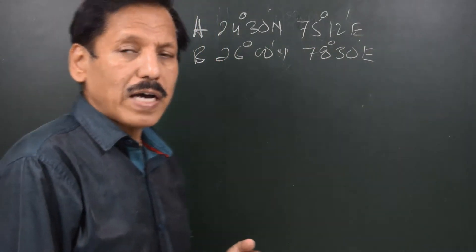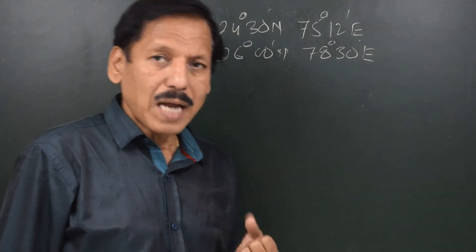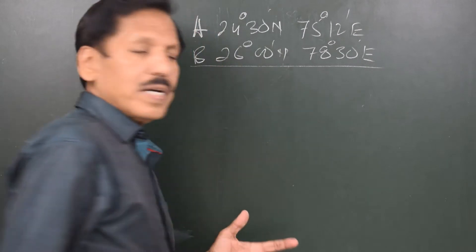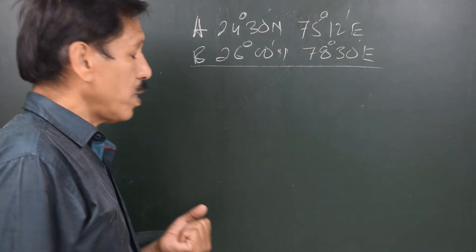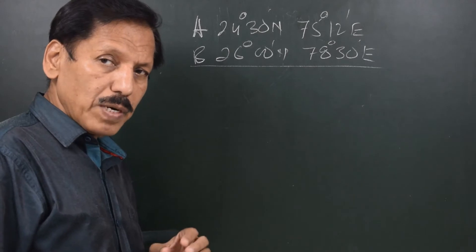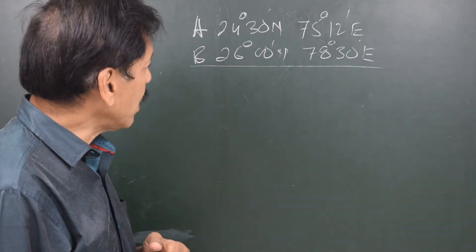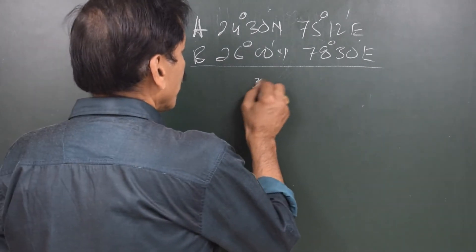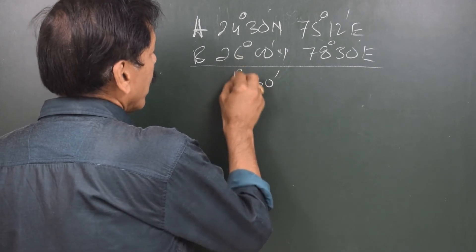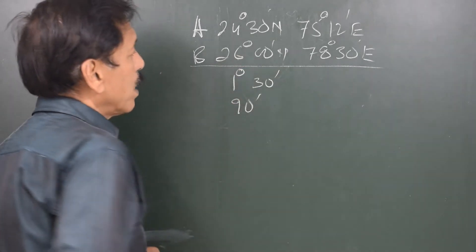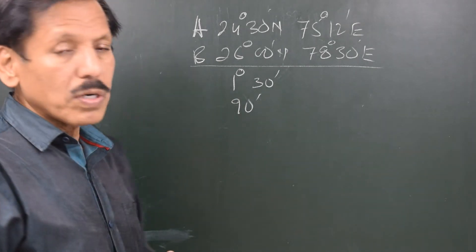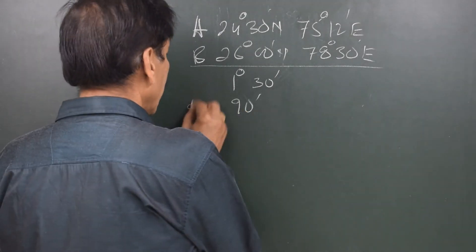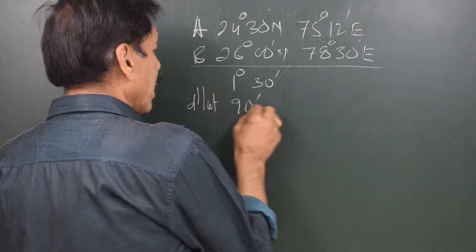When we have the initial and final positions, the minimum we can do is find the D-Lat and D-Long. How to find D-Lat? If it is the same name, you subtract. So we get 30 minutes and then 1 degree — that is 90 minutes of D-Lat. You are going from 24° 30' N to 26° N, meaning you are going northward. So this D-Lat is 90 minutes north.